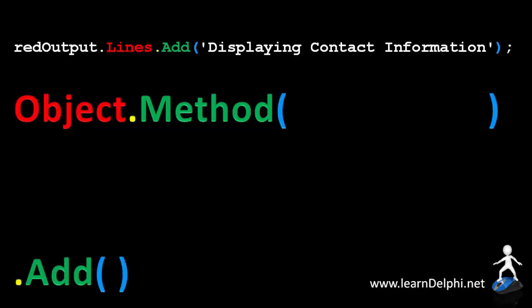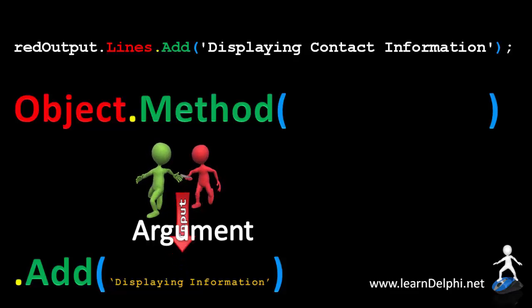Let's look at the add method in more detail. We must tell the add method what the contents of the line must be. We do that by providing the content as input between the two brackets. In this example we take the phrase 'displaying information' and we provide that as the input to the add method. We refer to this as passing an argument to the input parameter of the add method.